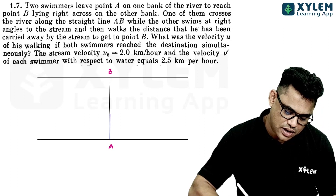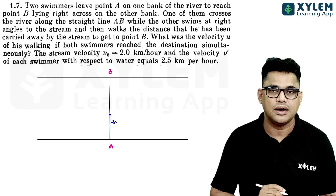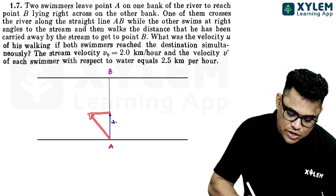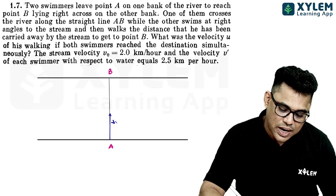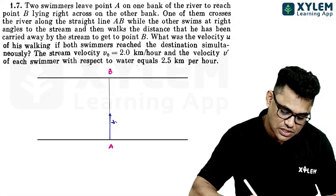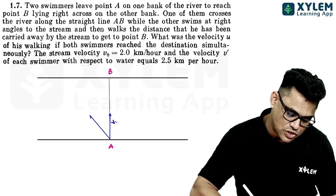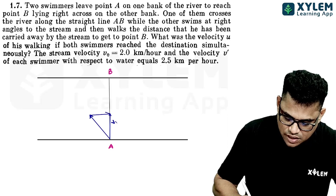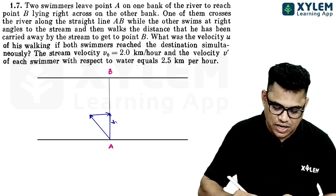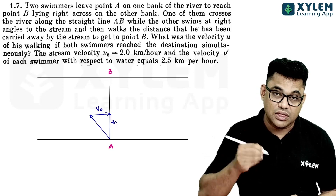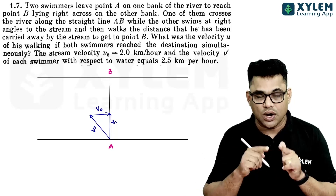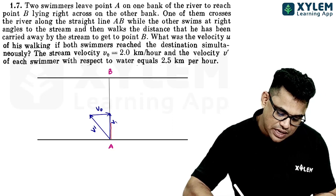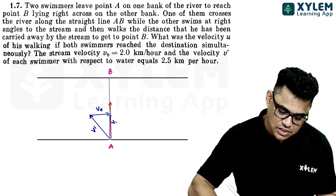First swimmer's velocity V1 is the velocity of the first swimmer in the ground frame. The first swimmer's velocity with respect to water must be directed at an angle such that the resultant goes straight across. The velocity of the stream is V0 in this direction, and the velocity of the swimmer with respect to water is V dash. V dash combined with V0 gives V1. For the second swimmer, his velocity with respect to water is directed perpendicular to the stream.